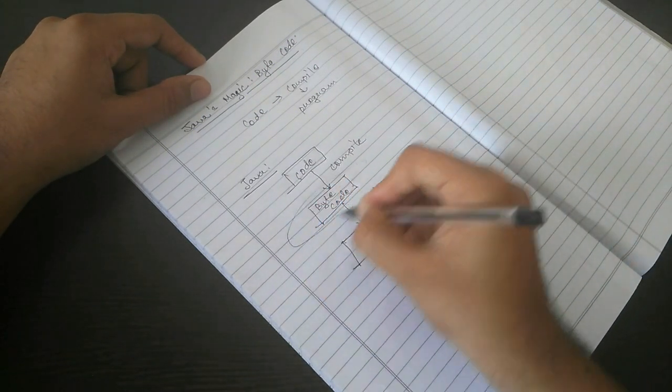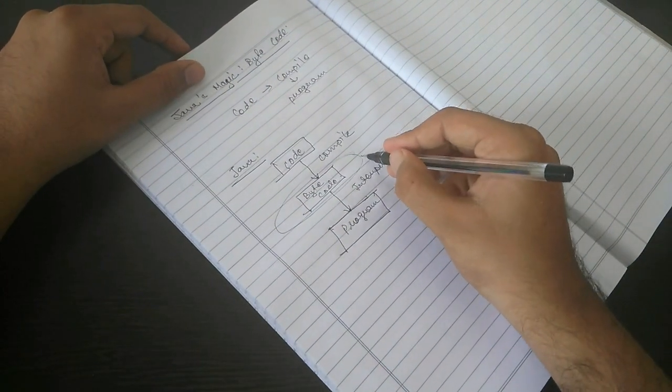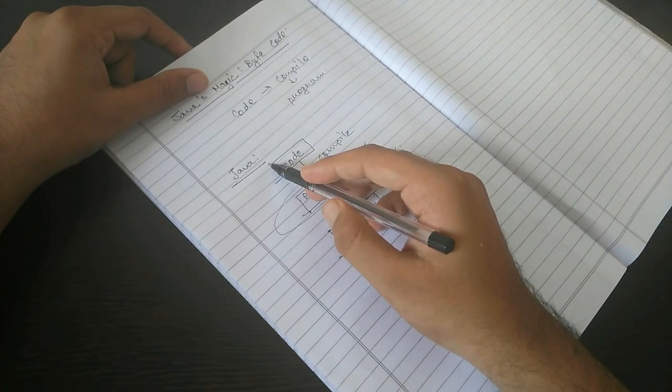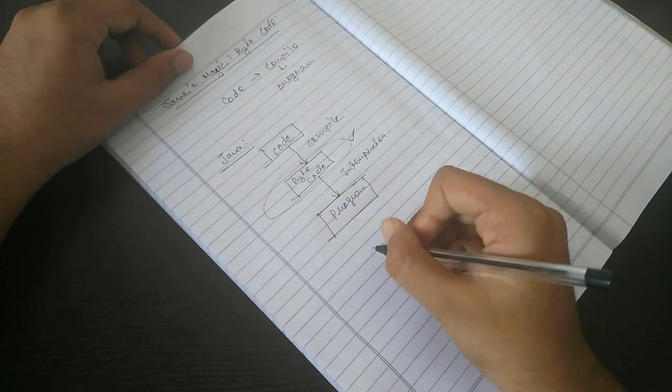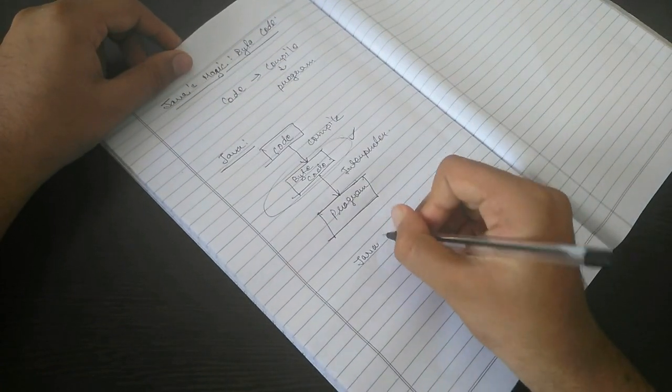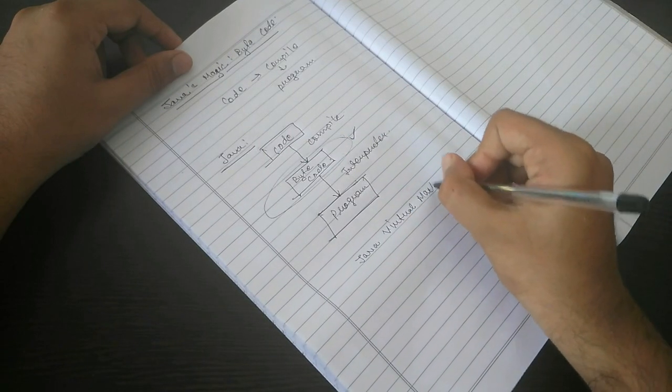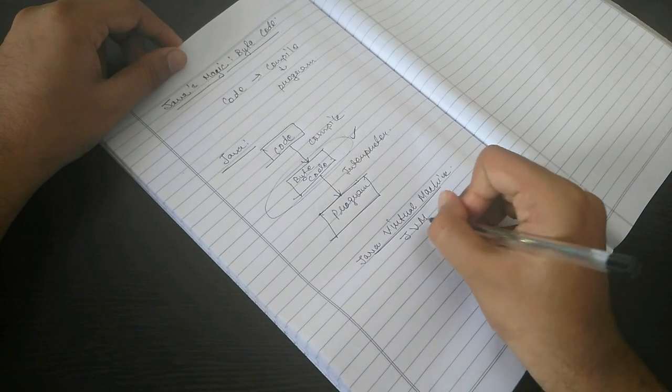Now why is there a concept of bytecode? This bytecode makes all programs made on Java platform independent. How? This is done with the help of Java Virtual Machine, also known as JVM.